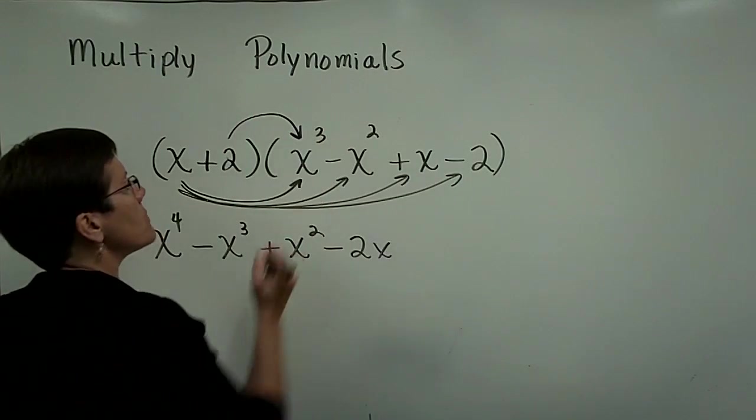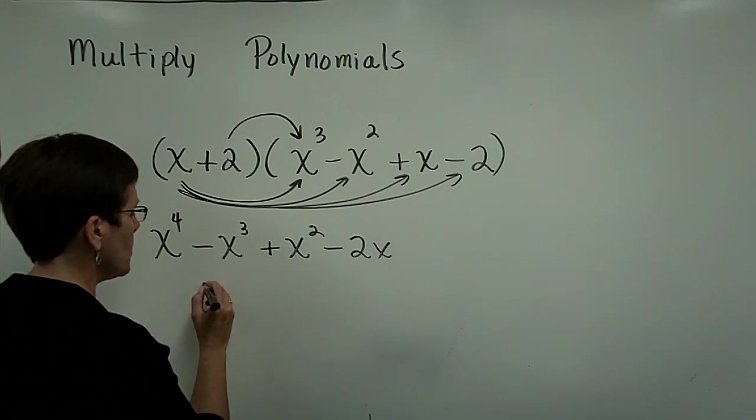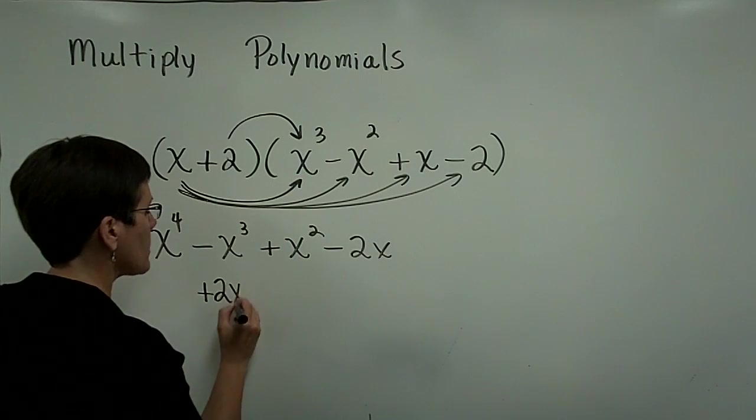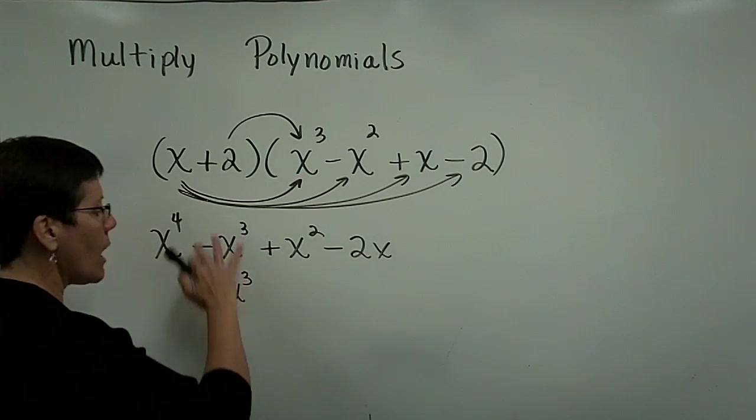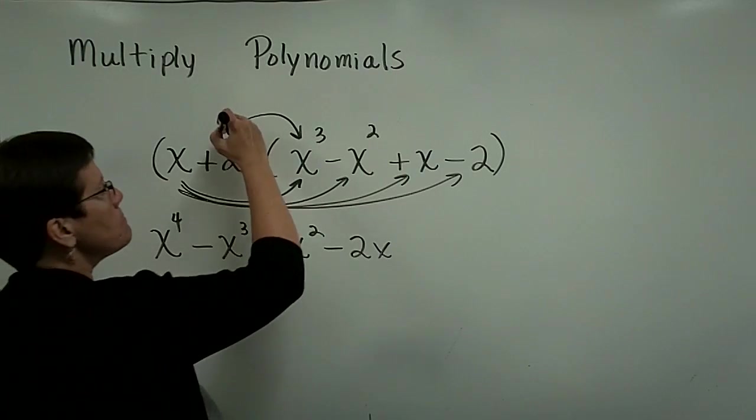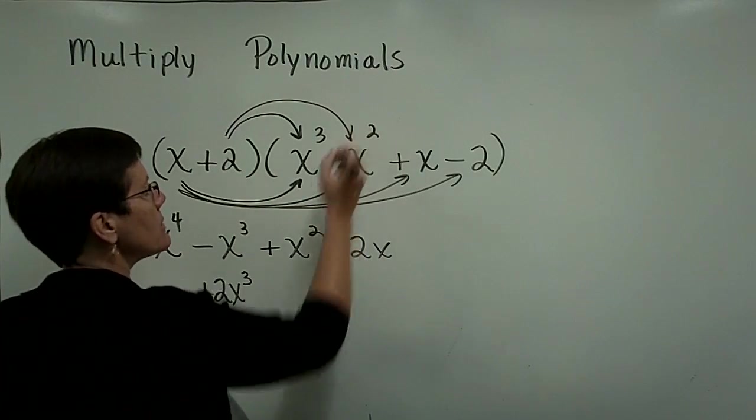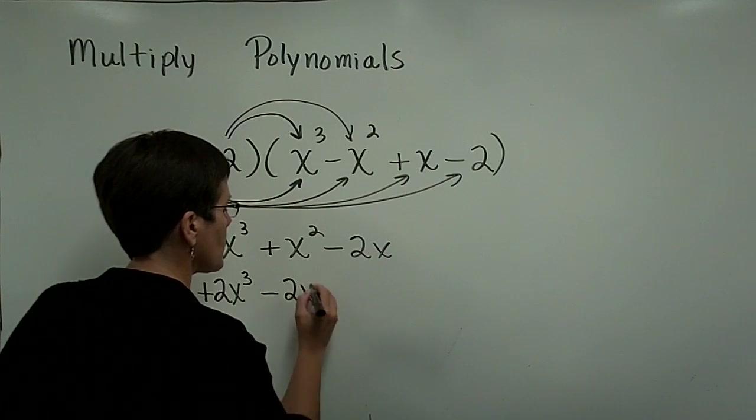Now I have to take the 2 times everything. So 2 times x cubed is a positive 2x cubed, and I'm lining it up with its like terms. 2 times a minus x squared is a minus 2x squared,